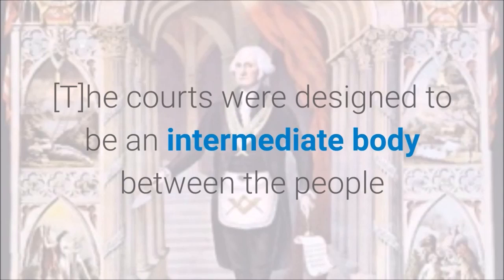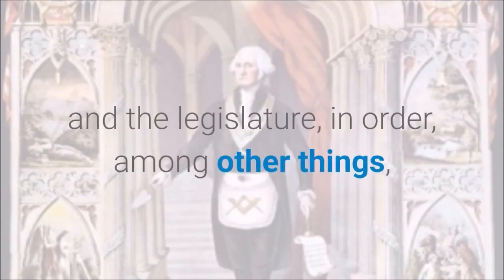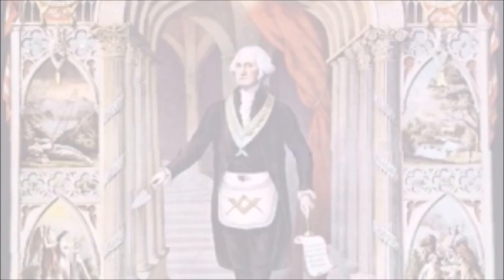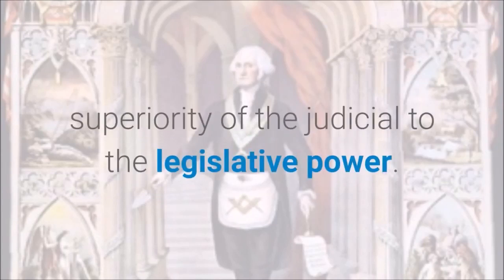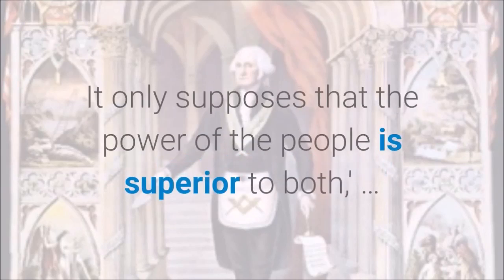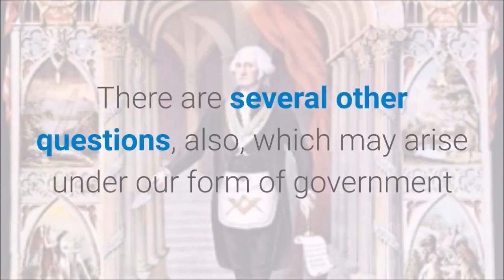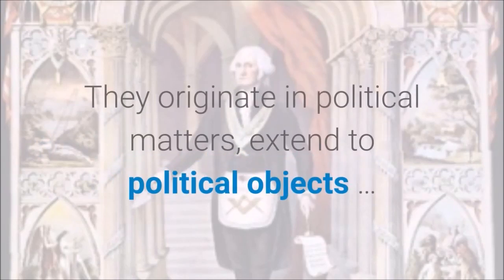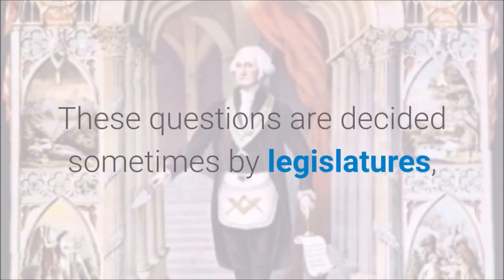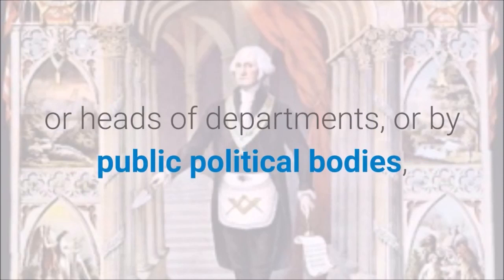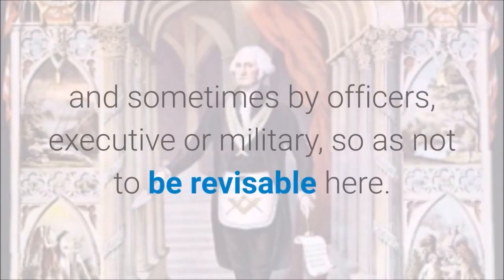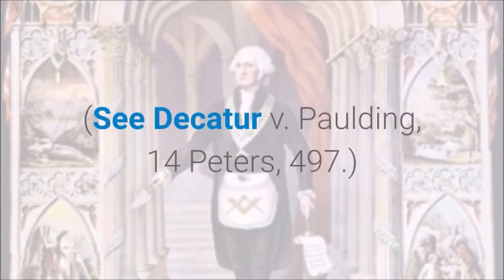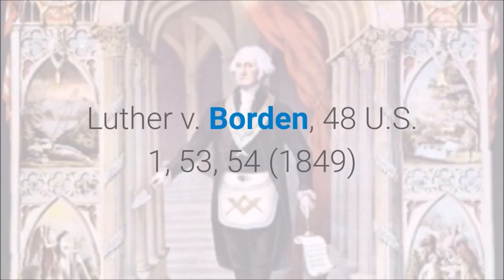The courts were designed to be an intermediate body between the people and the legislature, in order, among other things, to keep the latter within the limits assigned to their authority. Federalist No. 77, by Hamilton. Nor does the conclusion by any means suppose a superiority of the judicial to the legislative power. It only supposes that the power of the people is superior to both. There are several other questions which may arise under our form of government that are not properly of judicial cognizance. They originate in political matters, extend to political objects. These questions are decided sometimes by legislatures, or heads of departments, or by public political bodies, and sometimes by officers, executive or military, so as not to be revisable here. See Decatur v. Paulding, 14 Peters, 497. Luther v. Borden, 48 U.S. 1, 53–54, 1849.